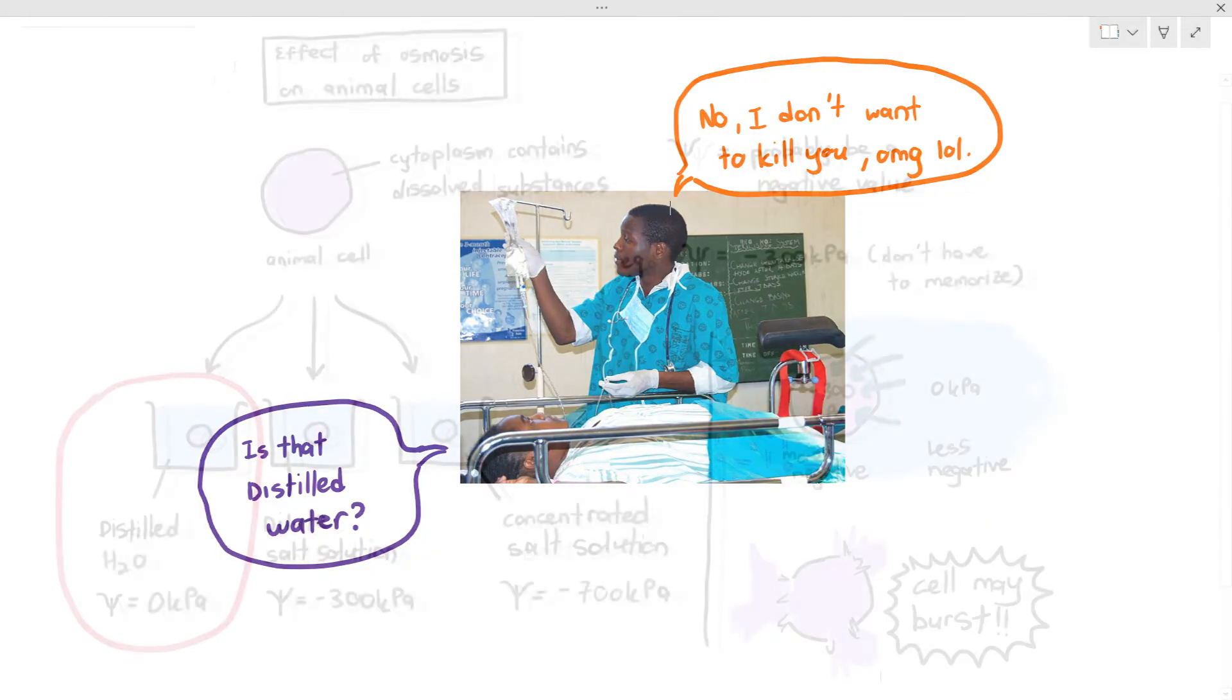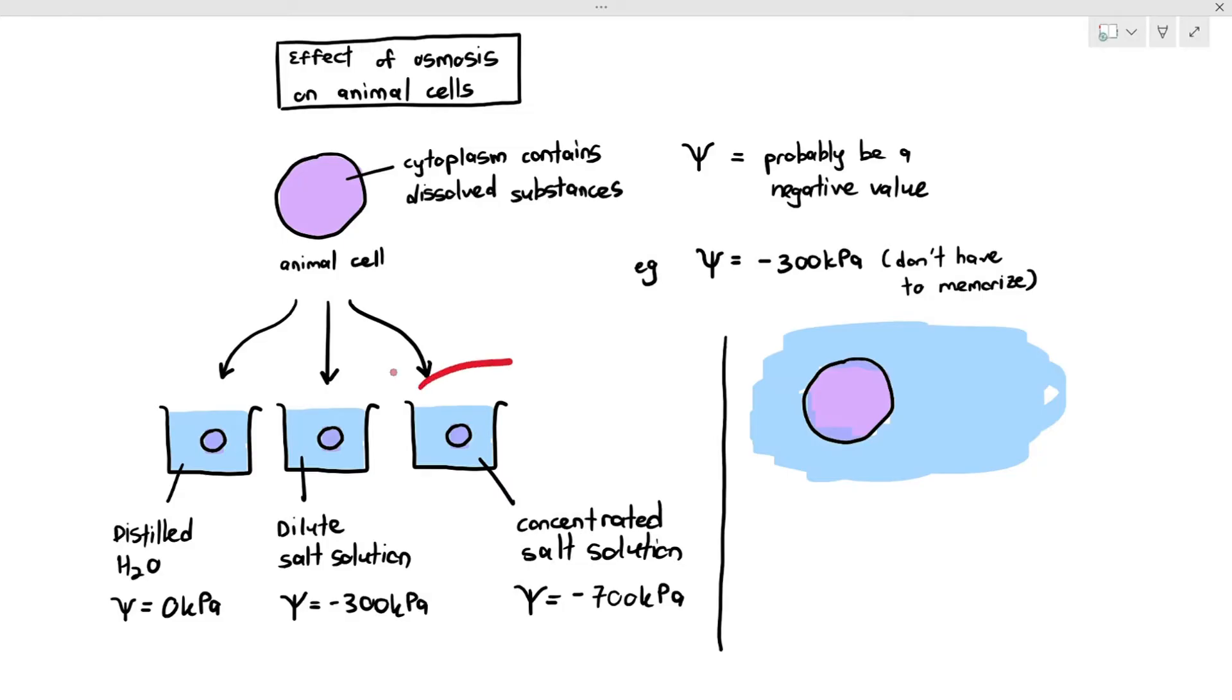In the next diagram, we would see what happens if you put the cell in a concentrated salt solution. The cell has negative 300 kilopascals in its water potential, but the solution outside the cell is negative 700 kilopascals. In this case, the cytoplasm's water potential is less negative and the concentrated salt solution's water potential is more negative.